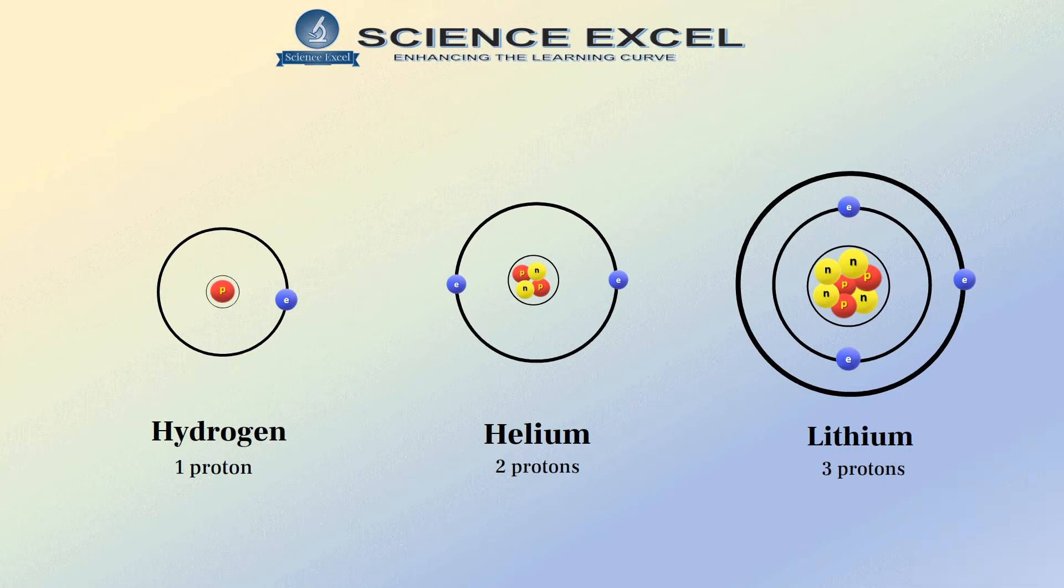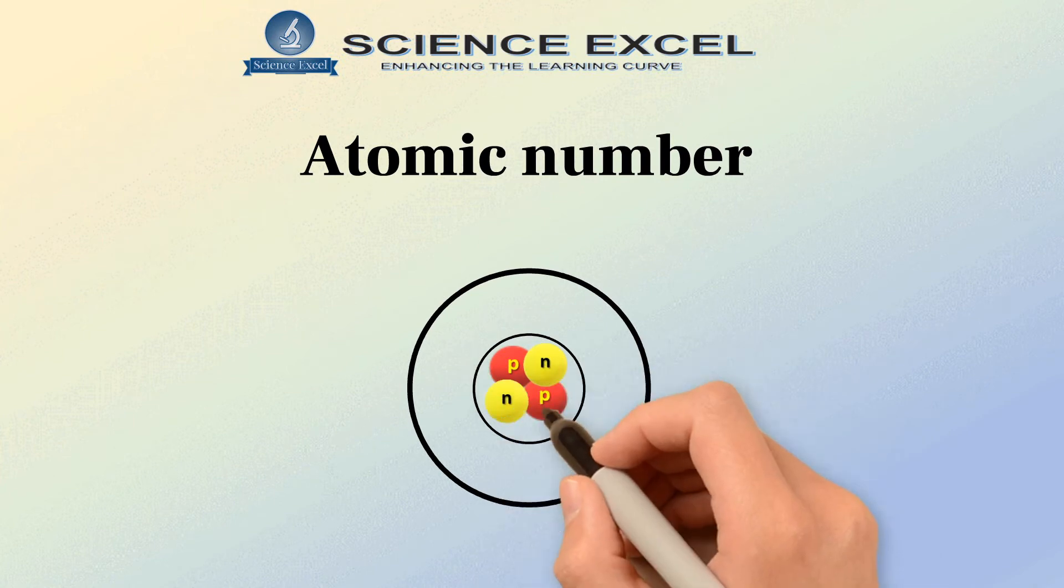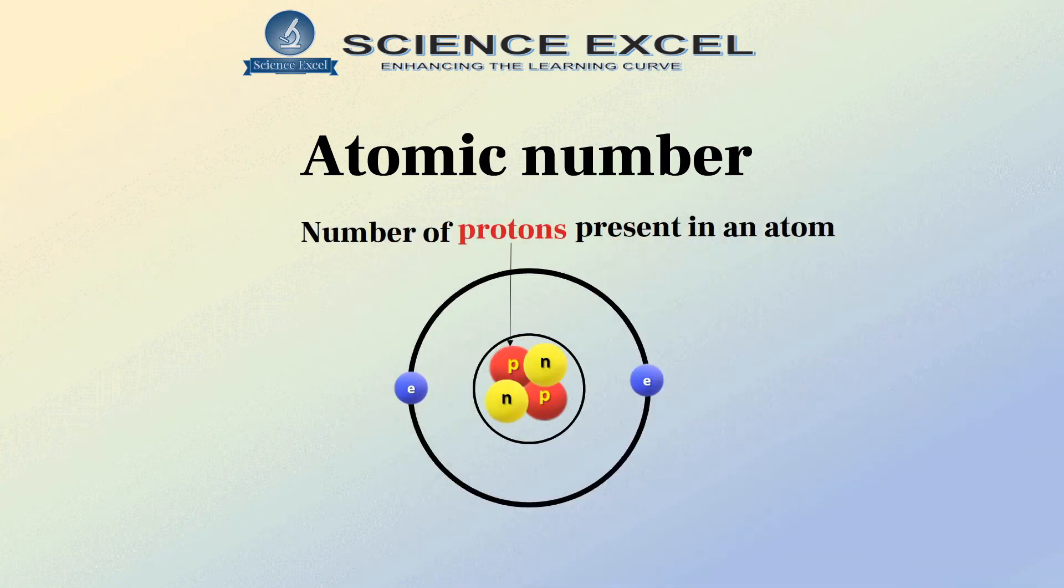That means the number of protons in the nucleus of an atom decides which element it is. This very important number is known as the proton number or atomic number. Atomic number is the total number of protons present in the nucleus of an atom. It is denoted by the letter Z.